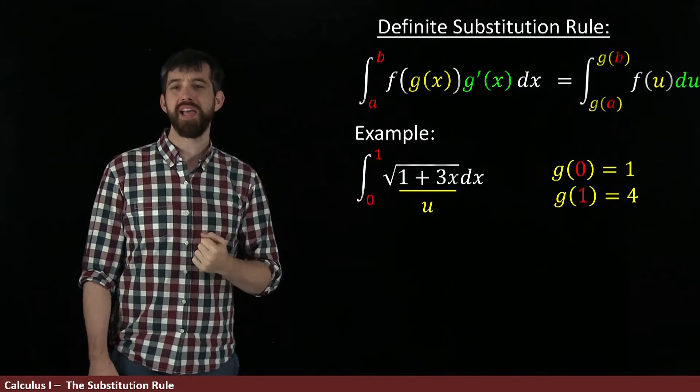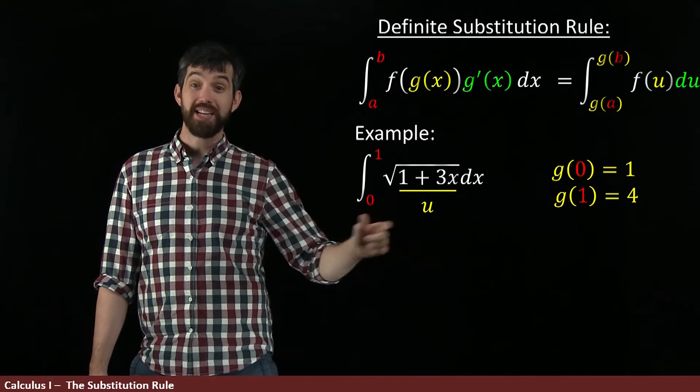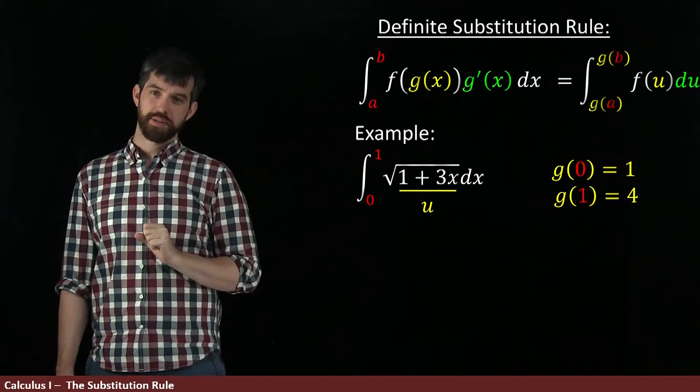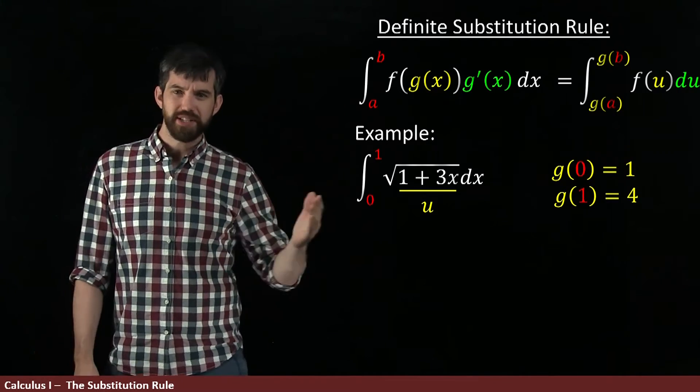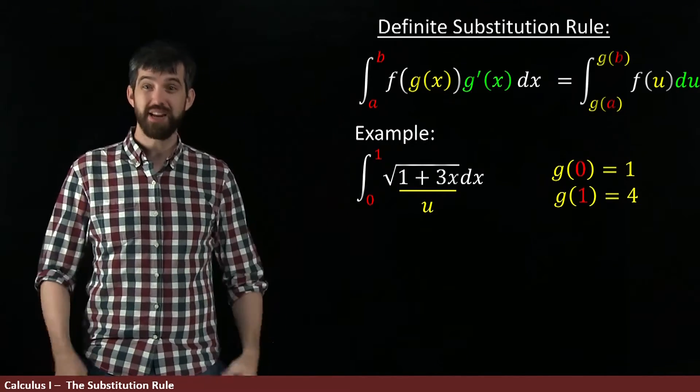Then I have to think about what's my du. The derivative of my g, the derivative of my 1 plus 3x is 3. So my du should be 3 dx. Now, the only problem is there's not actually a 3 on the outside. So I want there to be a 3 on the outside. I'm going to do that same trick.